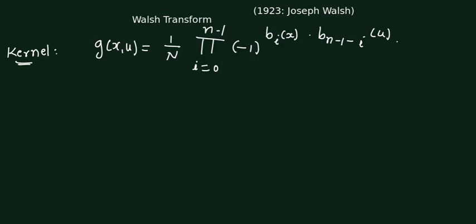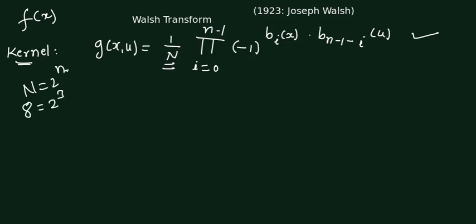This is the Walsh transform kernel shown for a one-dimensional signal. In a given one-dimensional signal f(x), the total number of points is represented by capital N. Capital N equals 2 raised to n. The index i varies between 0 to n minus 1, and the kernel part is the product of minus 1 raised to bi(x) times b(n minus 1 minus i) of u.